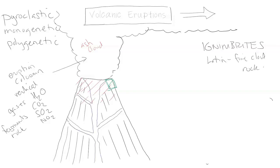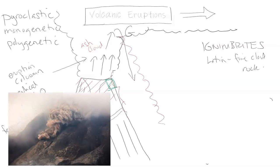A huge amount of ejected ash cloud material comes up very quickly in a large bulge of explosion and gas. Gravity — because of the high volume and high mass — takes hold of it straight away and brings it straight down, creating this fiery cloud flowing down the sides of the volcano. This is called a pyroclastic cloud, or flow.